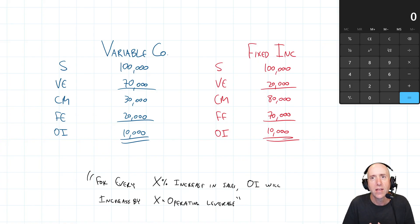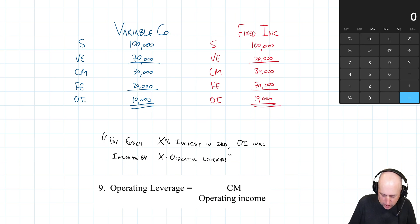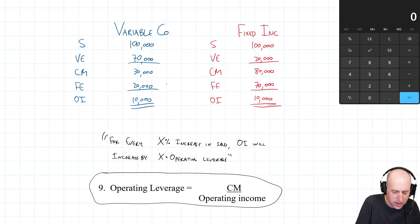Well, we would say that fixed Inc has a much higher operating leverage than variable company. And that's not a compliment or an insult. That's just an observation. And let's explain by calculating the operating leverage of both of these companies. It's CM divided by operating income. So for variable company, it's 30 divided by 10. Its operating leverage is three, right? 30,000 divided by 10,000, CM divided by operating income.